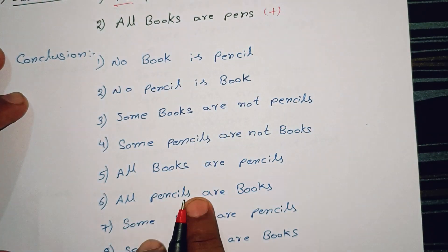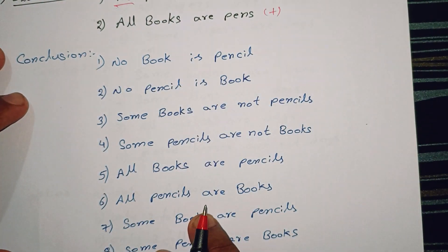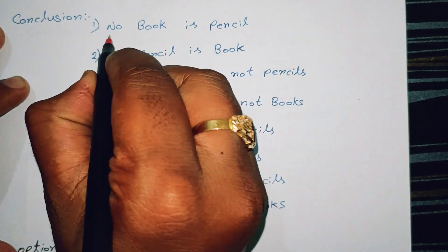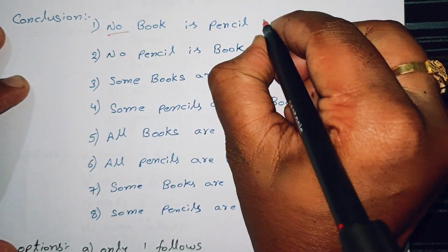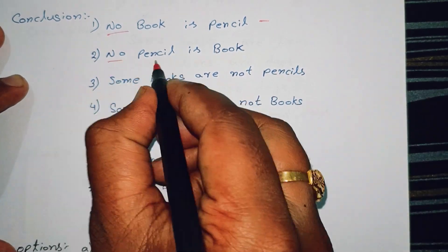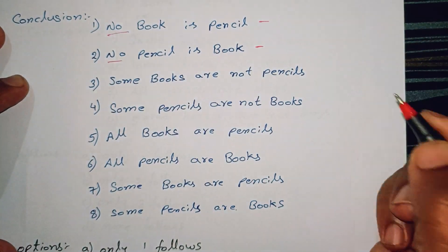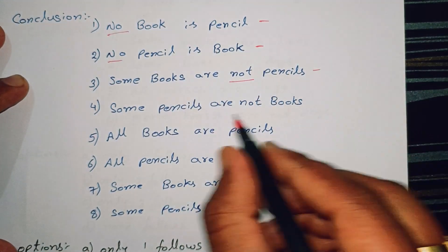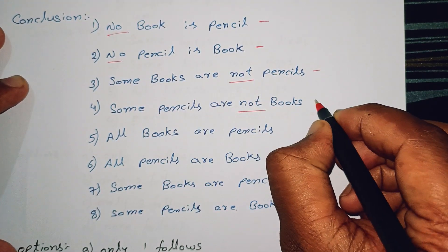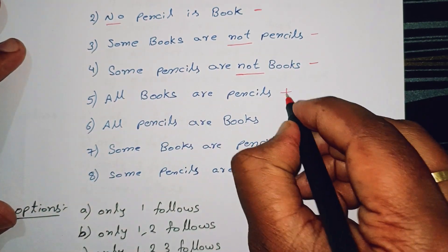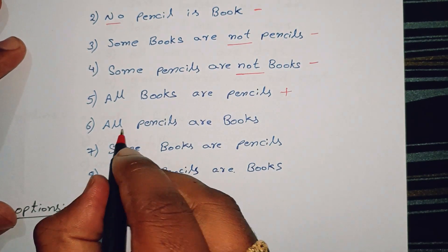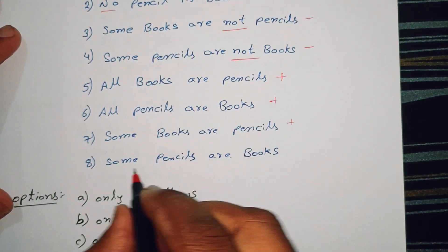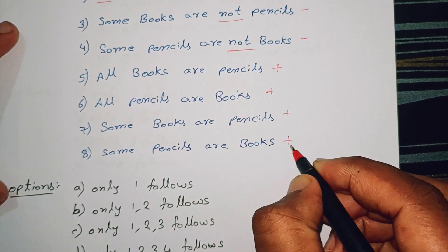Now we will check the answers. 'No book is pencil' — this is a negative conclusion. 'No pencil is book' — this is a negative statement. 'Some pencils are not' — this is also a negative statement. 'All books are pencils' — this is a positive statement, because there is no 'no' or 'not'. 'All pencils are books', 'some books are pencils', 'some pencils are books' — these are all positive statements.